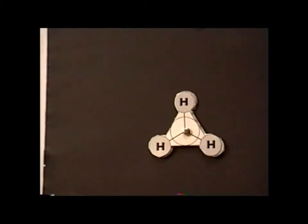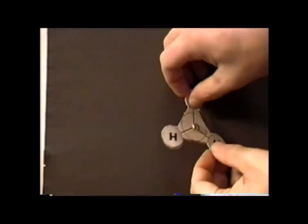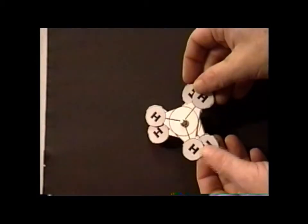It turns out, though, that the difference in energy between the eclipsed conformation and the staggered conformation is relatively small. So small that at room temperature, we have very nearly free rotation around the carbon-carbon bond.